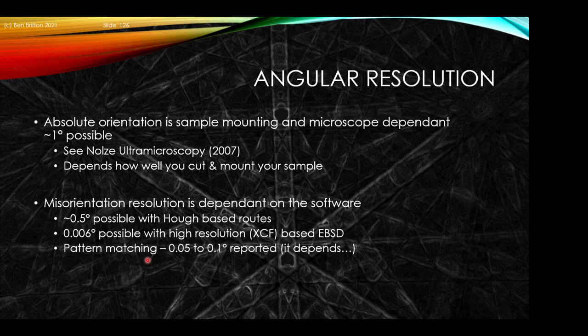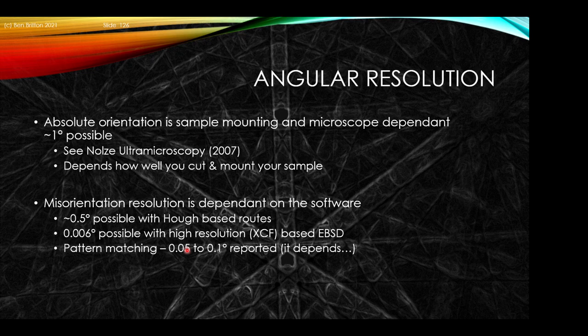For an EBSD experiment, there are two angular resolutions that are important. The absolute orientation is related to the sample mounting and the microscope setup. Typical methods will be within two or three degrees, with the most important aspect being how well you cut and mount your sample — there are methods to get this within one degree. The misorientation resolution — the point-to-point orientation within the same map — is dependent on the software. In Hough-based approaches it's typically around 0.5 degrees. You can get two orders of magnitude better using high-resolution or cross-correlation EBSD, and pattern matching can access typically 0.1 to 0.05 degrees.